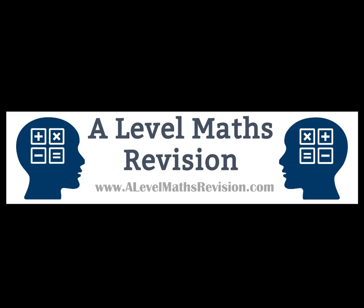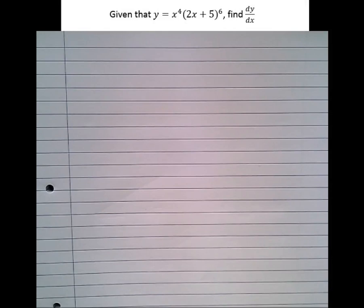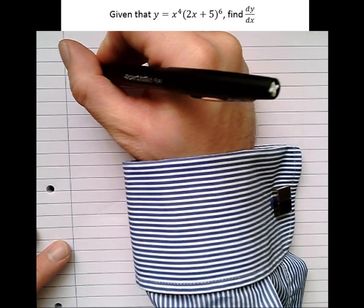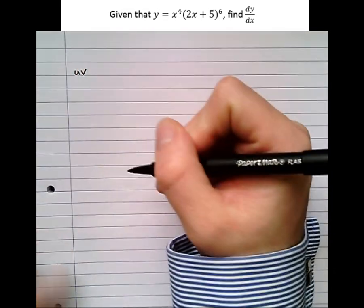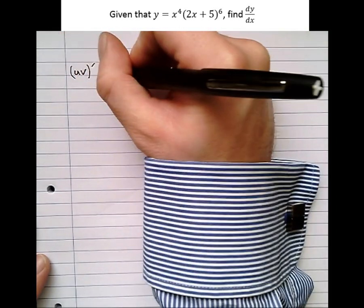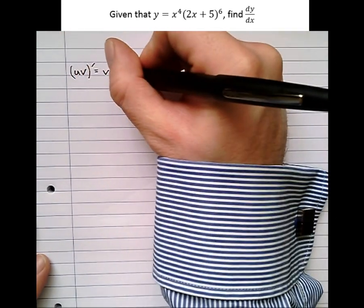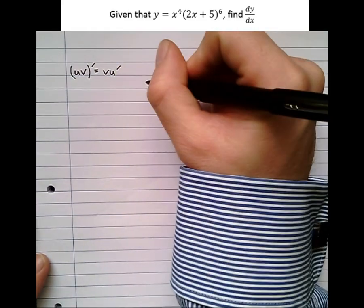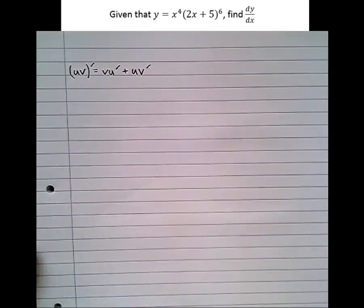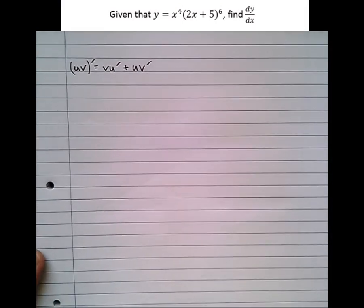In this video we're going to have a look at the product rule for differentiating functions. Before we do this question, let's discuss what the product rule actually is. In differentiation, the product rule says that when you've got two functions multiplied together, u times v, then the differential of that is v times the differential of u, plus u times the differential of v.